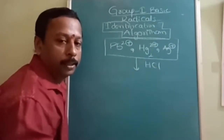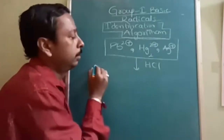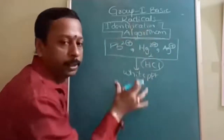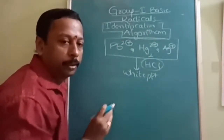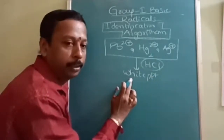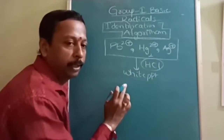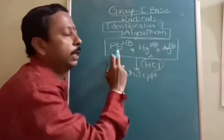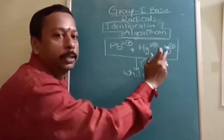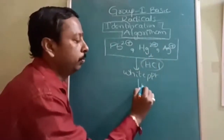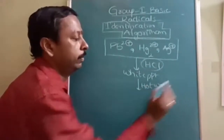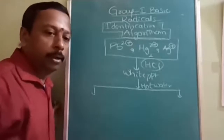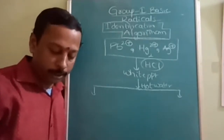When the given salt is treated with HCl, a white precipitate is formed. Out of the seven total groups, if white precipitate appears, the preliminary test indicates the salt may contain Pb²⁺, Hg₂²⁺, or Ag⁺. This is the start of the algorithm — if white precipitate forms, we proceed further.